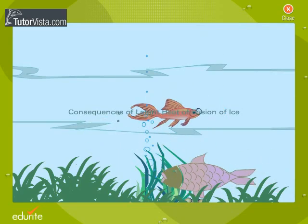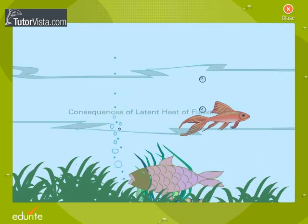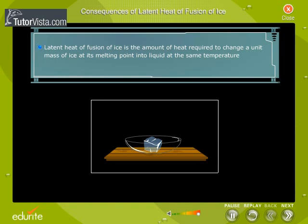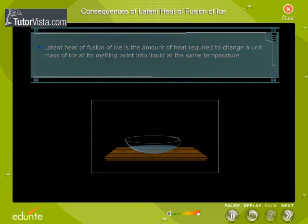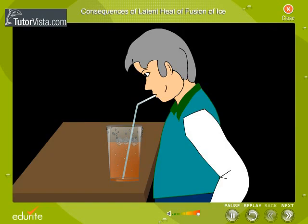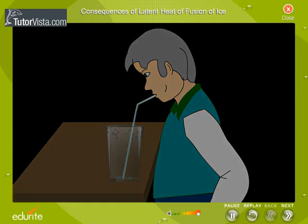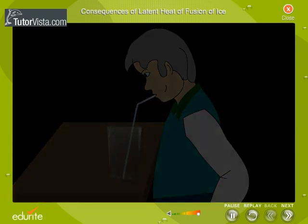Consequences of latent heat of fusion of ice. Latent heat of fusion of ice is the amount of heat required to change a unit mass of ice at its melting point into liquid at the same temperature. Did you know that the latent heat of fusion affects our life to a great extent? Let us discuss some of the consequences of latent heat of fusion of ice.